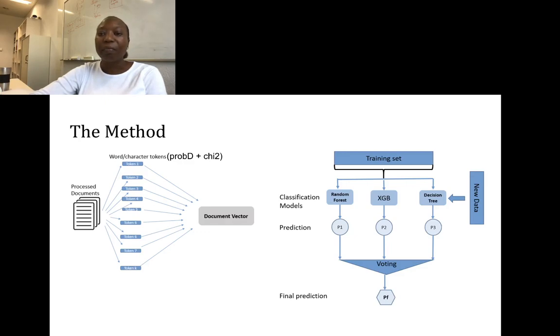This discriminative function is made up of three classifiers: the random forest, the boosting, and the decision tree. Each classifier provides a prediction of a particular class, and these predictions are combined to arrive at a final decision.